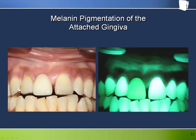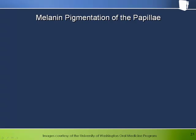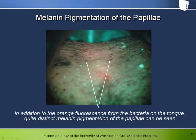Earlier we saw that the attached gingiva typically appear dark under Velscope, although they naturally appear pale pink under white light. Here's another reason they can appear dark under Velscope — in this case the same reason they appear dark under white light: the absorption of light by melanin. In addition to the orange fluorescence from bacteria on the tongue, quite distinct melanin pigmentation of the papilla can be seen under fluorescence, and as we might expect, the melanin pigmented papilla also appeared quite dark in white light.